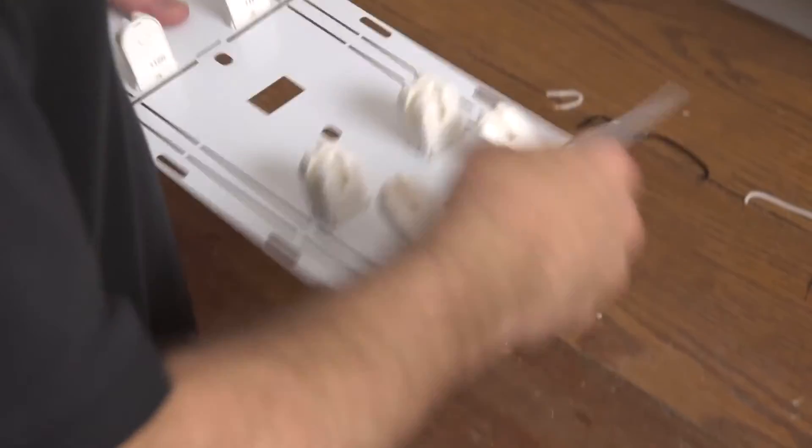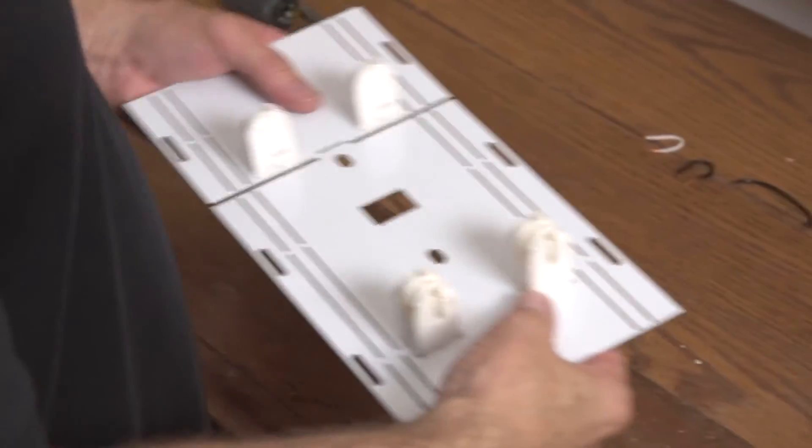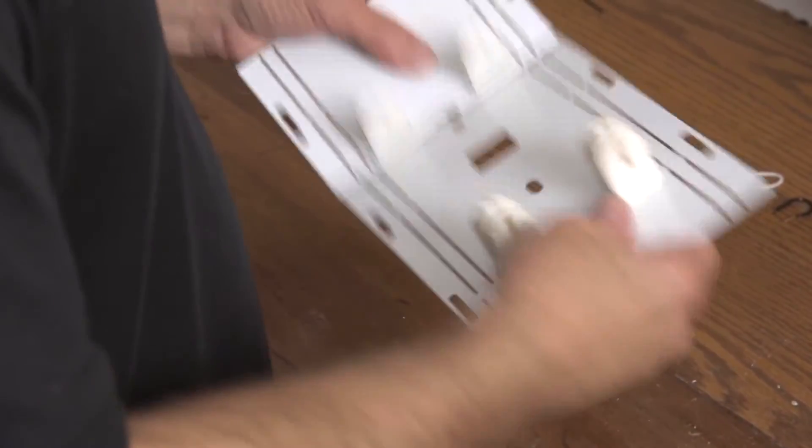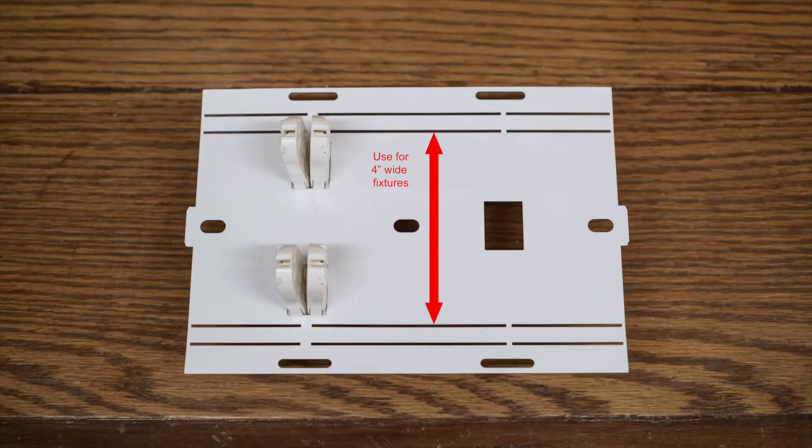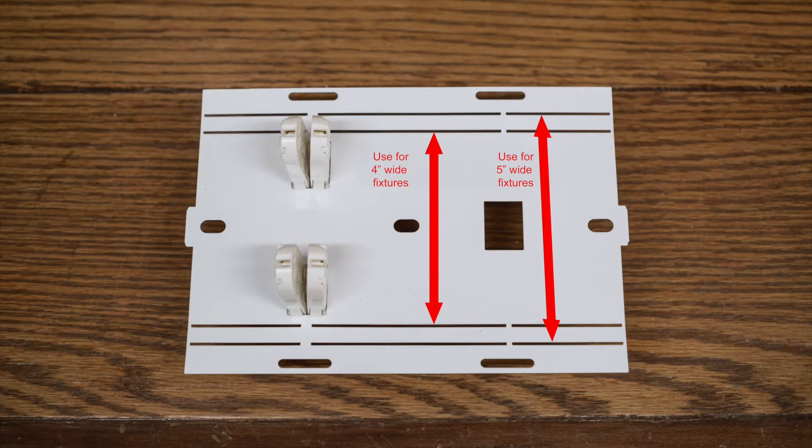Take the bracket kit and break it into its three distinct parts, the center and two ends. Please note that our kit accommodates both 4 and 5-inch fluorescent fixture widths.